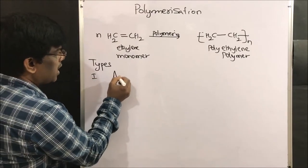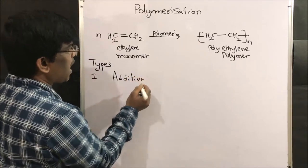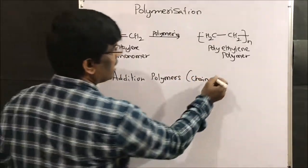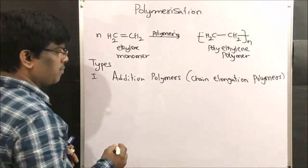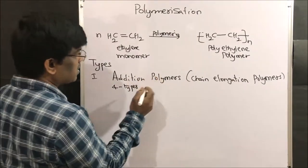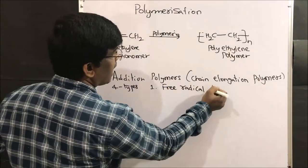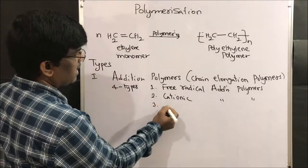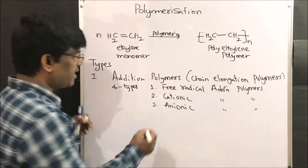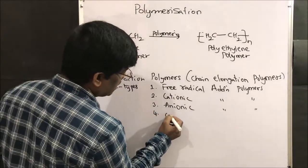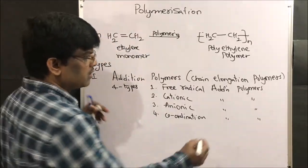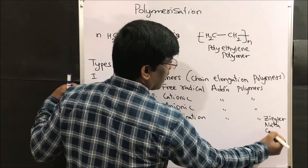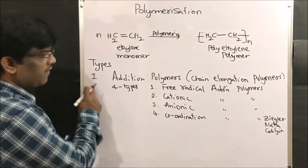The first type of polymer is addition polymers — monomers are added to each other. Addition polymers are also known as chain elongation polymers, and they are of four types: free radical addition polymers, cationic addition polymers, anionic addition polymers, and coordination addition polymerization. Under coordination addition polymerization, we are going to learn the Ziegler-Natta catalyst, which is very important.